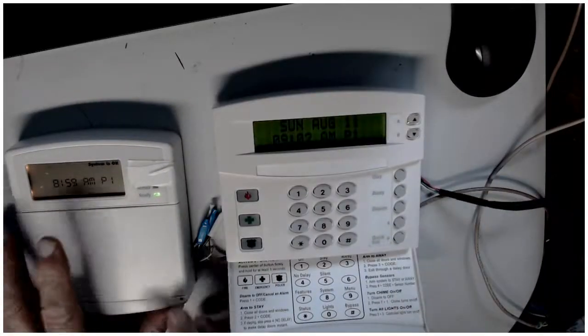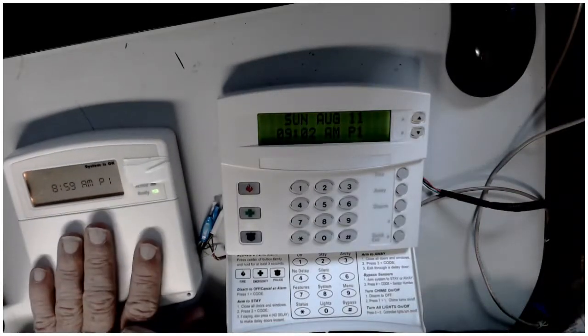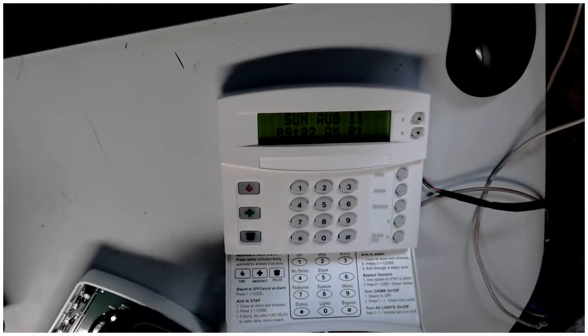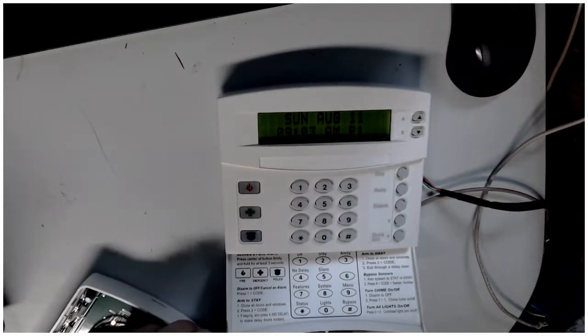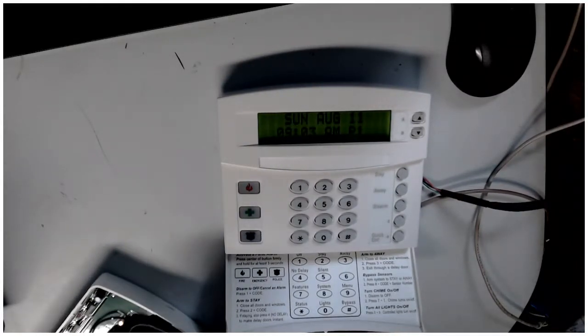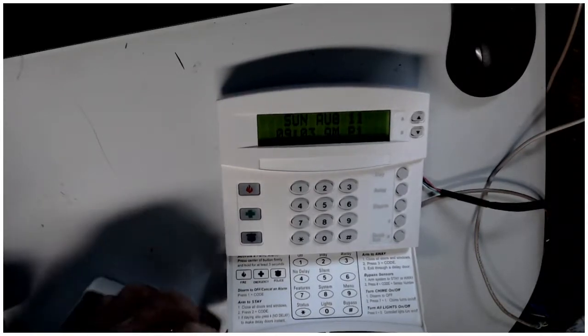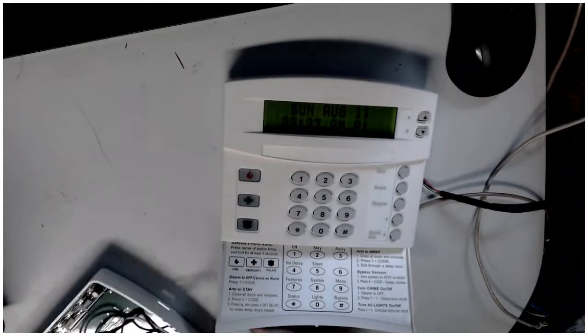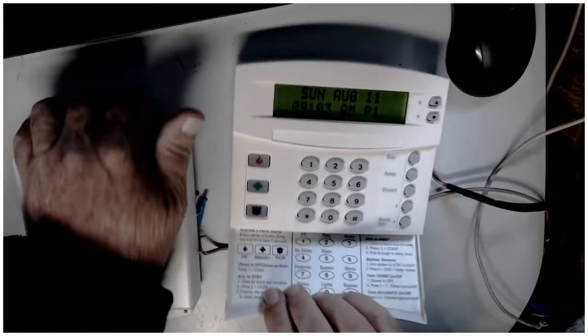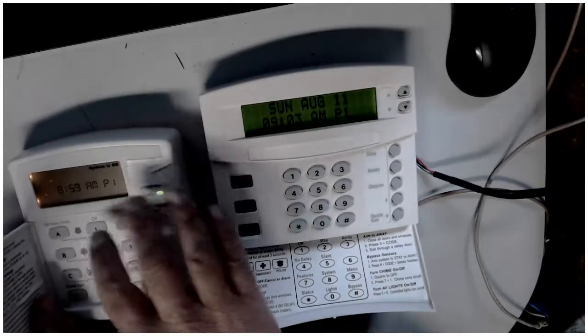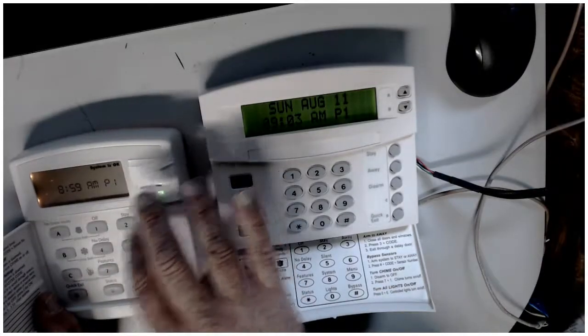So now say that the construction is done and you want to add this back into the system. It can't be any easier than this. All you have to do is just rewire it. So I'm just putting this wire back in here. All right. So I got it wired back up on the wall and you have it wired into the control panel. But if you notice it still won't work.